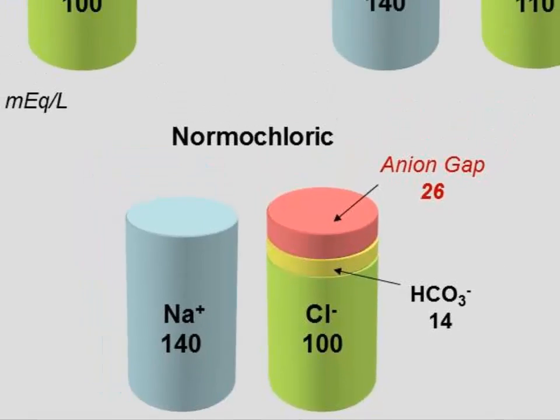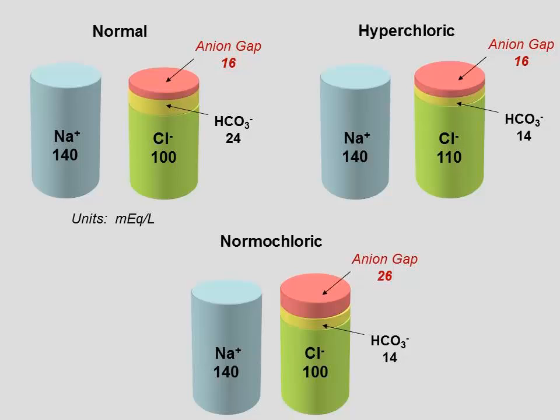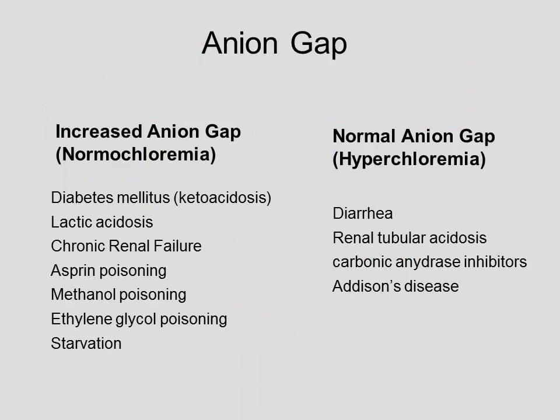So then the next question is, why does that matter? What does one condition, what does the hyperchloric condition tell you relative to the normochloric condition? Well, it has to do with what caused the metabolic acidosis to begin with.